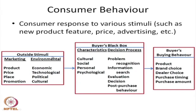In the first box, we have outside stimuli coming from 2 distinct groups of sources. One is the company's marketing efforts with regard to the 4 Ps — product, price, place and sales promotion. The other is the stimuli generating from the environment: the economic environment of the country, the technological environment, the political environment, and the cultural value system in the society.